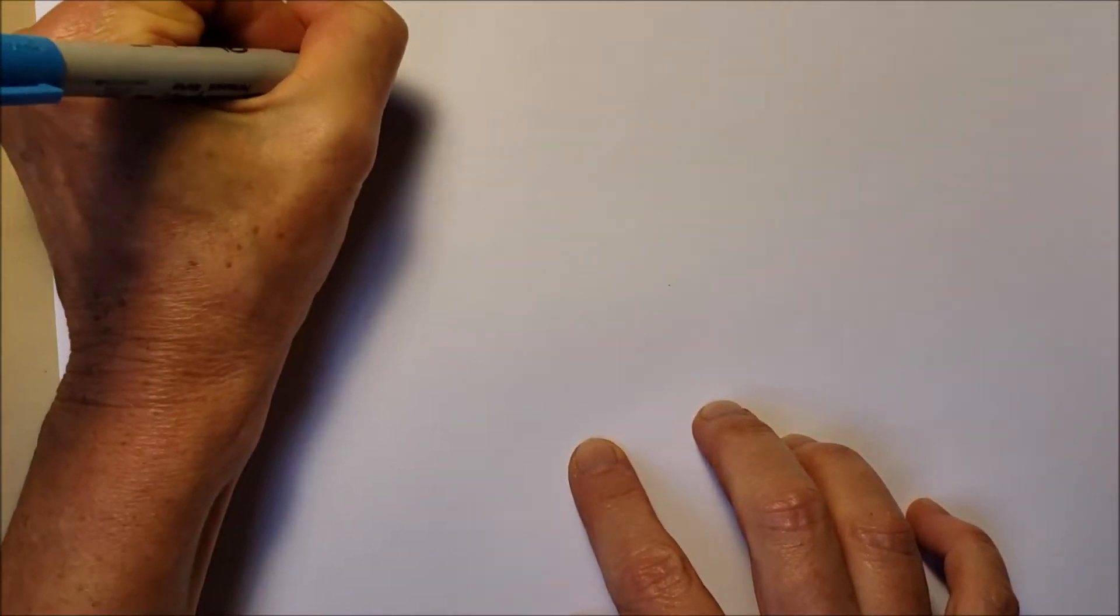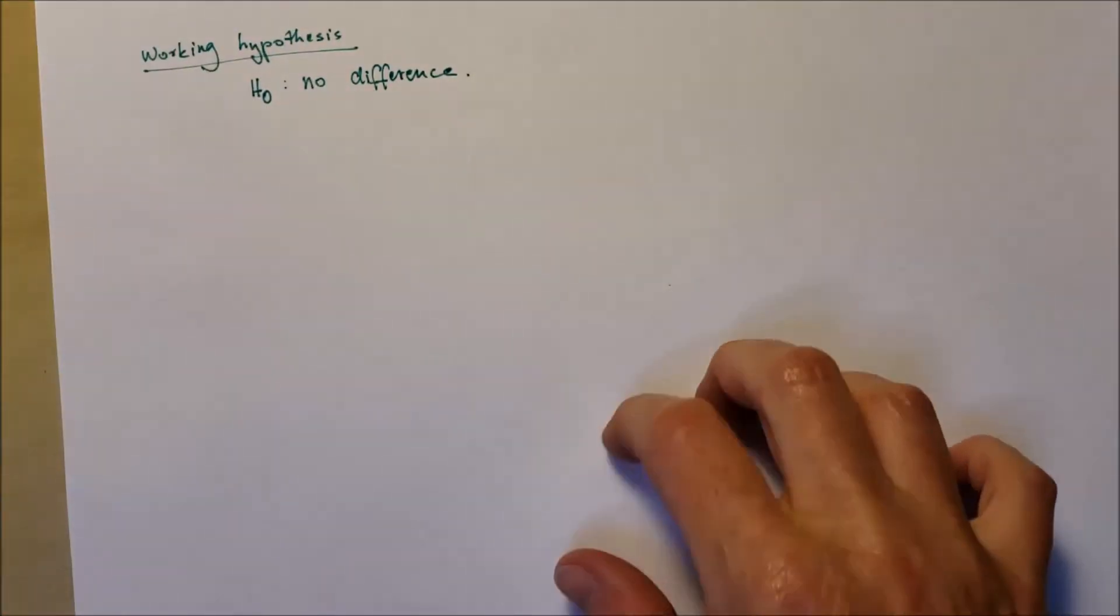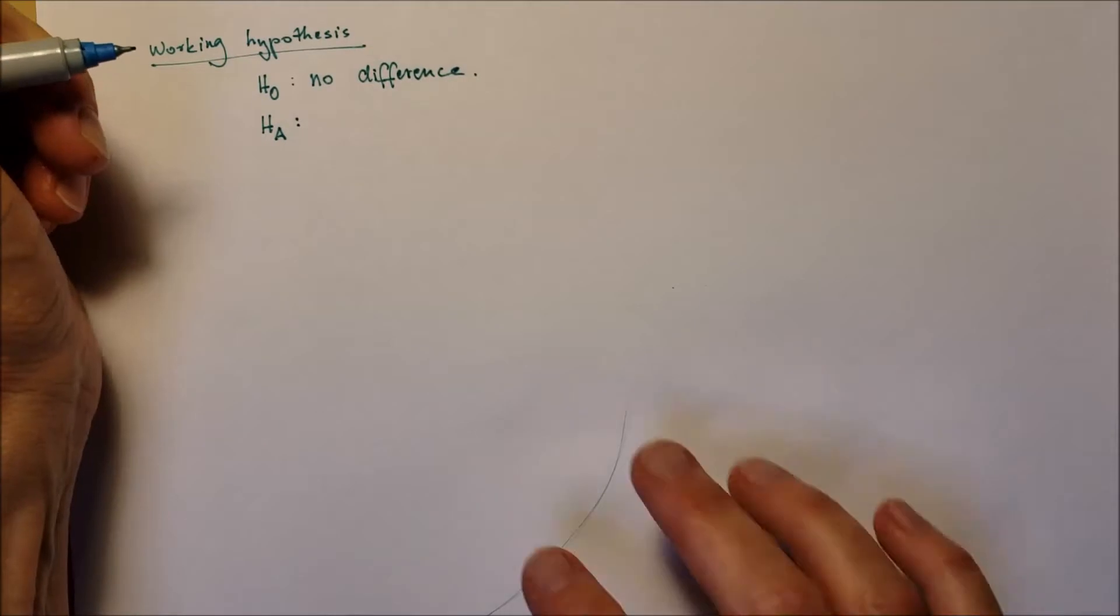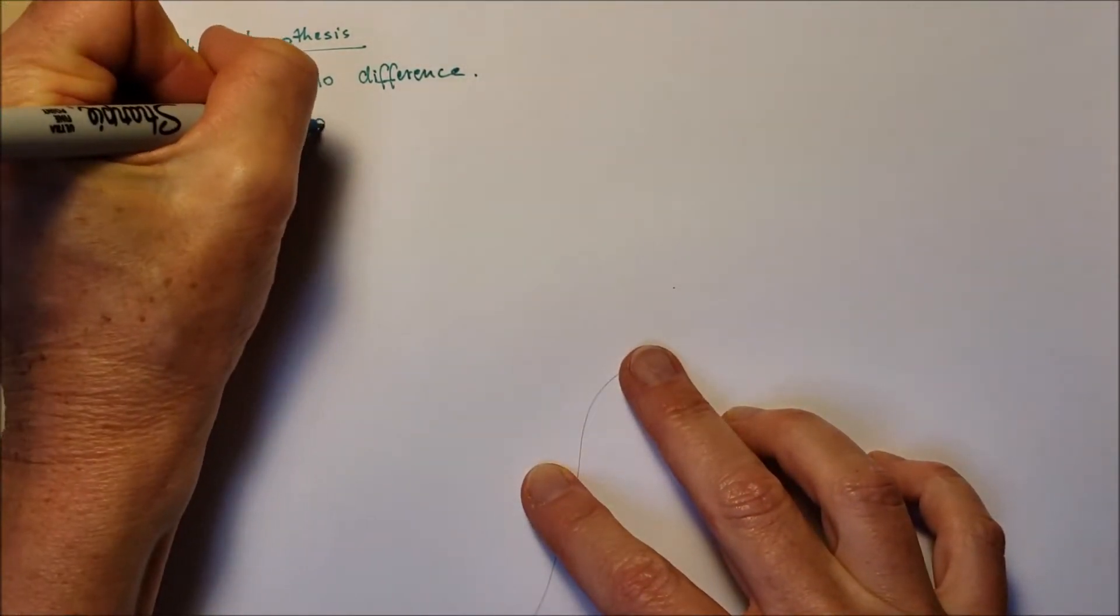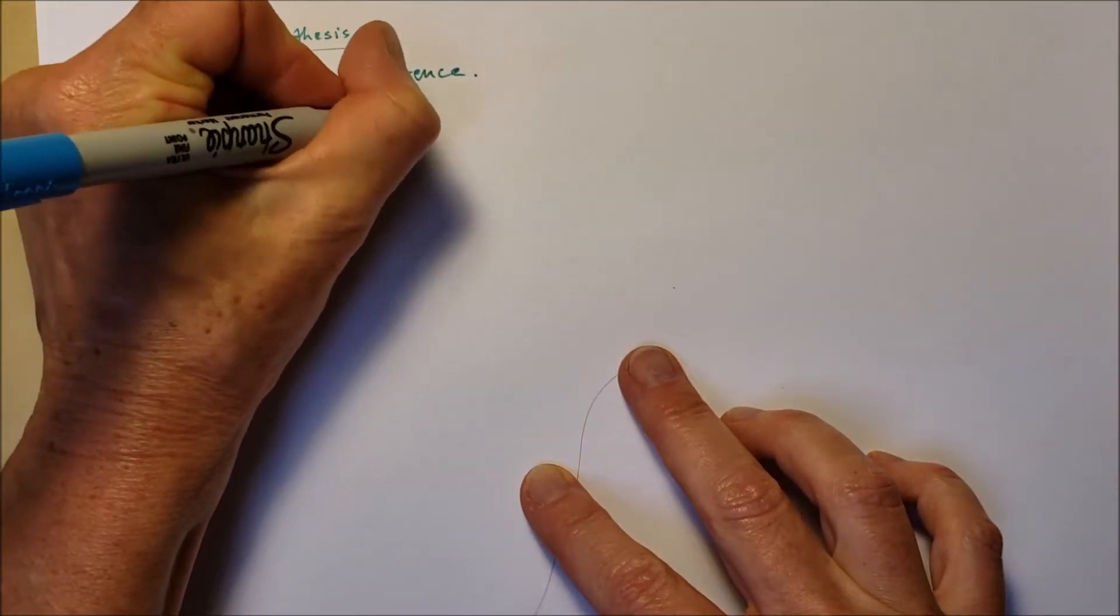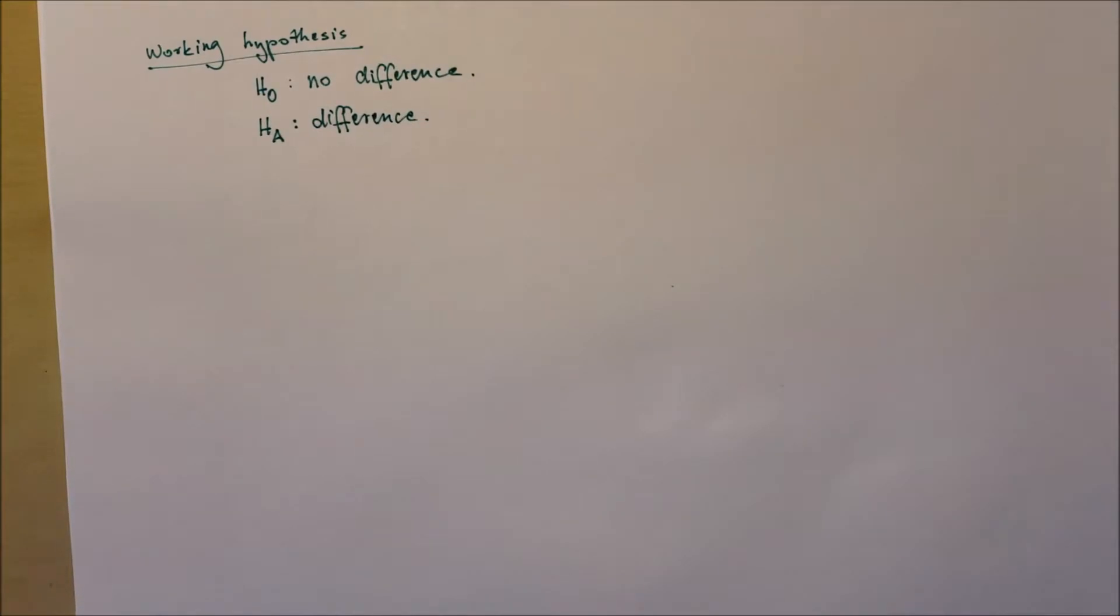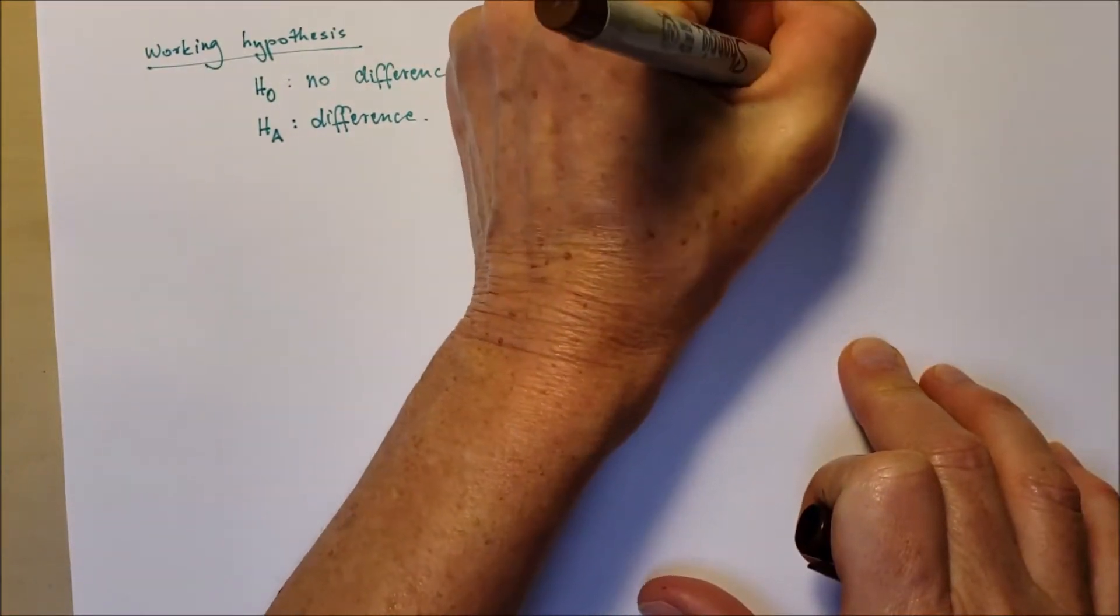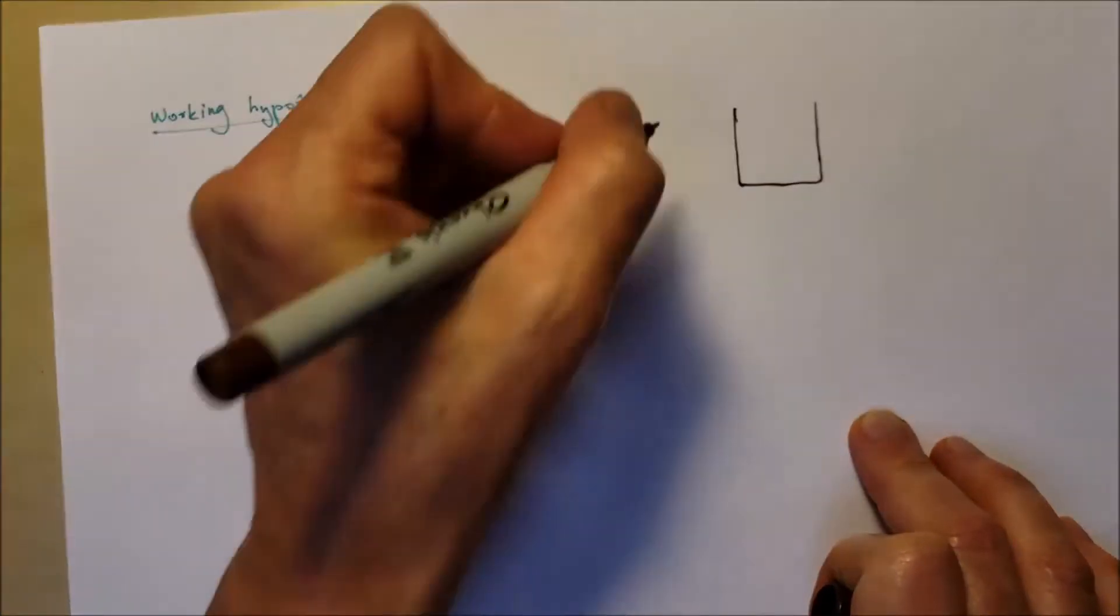Now there are two working hypotheses, the null hypothesis that states that there's no difference between the groups of data. The difference between the group's data is due to chance. And also the alternative hypothesis that states the experimental observation that the data of the groups are different is the result of some non-random cause.